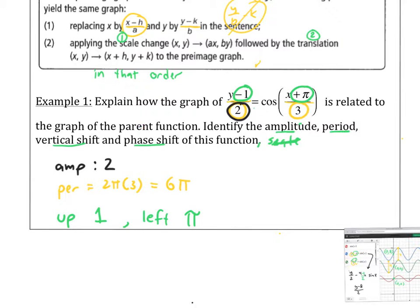And this one here says I'm going to go left π. So how is this related to the parent function? Ultimately, it's the parent function stretched vertically by 2, horizontally by 3. Then I shift up 1, left π. So that is the description of what's happening. And this is just a list of what's happening.